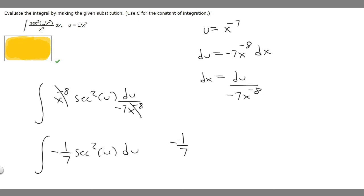So the antiderivative of secant squared of u must be tangent of u. So it's just minus 1 over 7 times the tangent of u. And then whenever you take an antiderivative, you have to add a constant, so plus C.